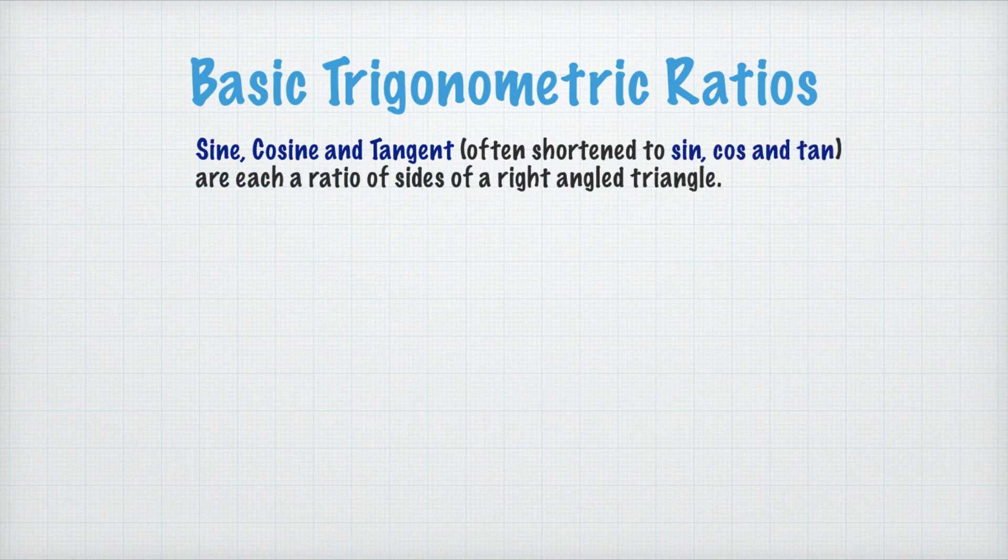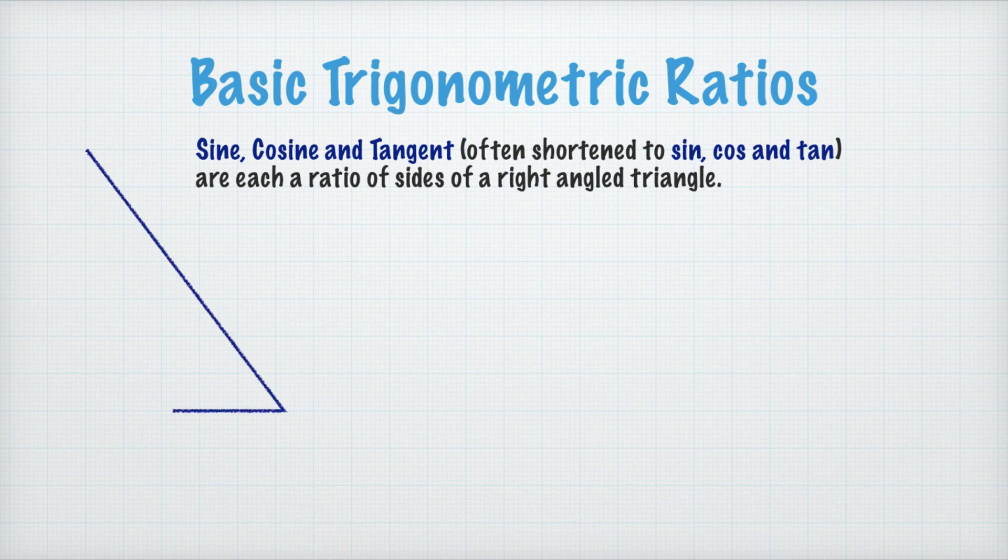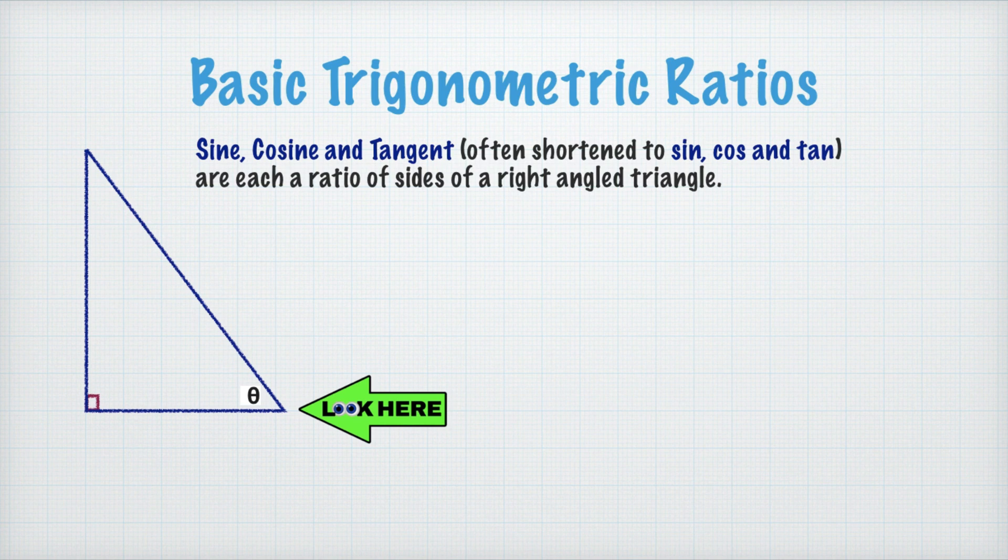Sine, cosine, and tangent, often shortened to sin, cos, and tan, are each a ratio of sides of a right angle triangle. Suppose we have a right angle triangle like this, and our point of view right now is the angle theta. Now, before we find out the value of the sine, cosine, and tangent, it is important for us to give the name or give a label to each side of the right angle triangle like this.